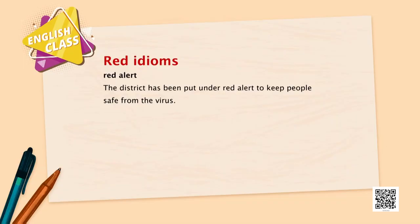'Red alert — the district has been put under red alert to keep people safe from the virus.' Red alert is an official action by civic authorities, police, or the army when an adverse incident is expected. People are warned not to move unnecessarily and security personnel are deployed. In 2020, many places were put on lockdown and under red alert — a warning.